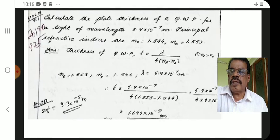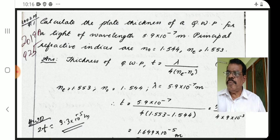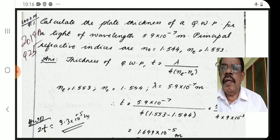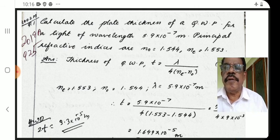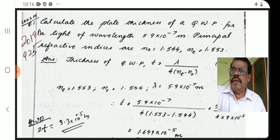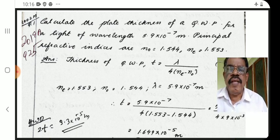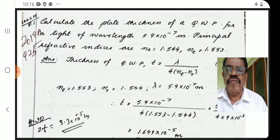This is a quarter wave plate problem. Calculate the thickness of a QWP for light of wavelength 5.9 × 10⁻⁷ meter. The principal refractive indices are ne = 1.553 and no = 1.544. We use the formula for QWP thickness.